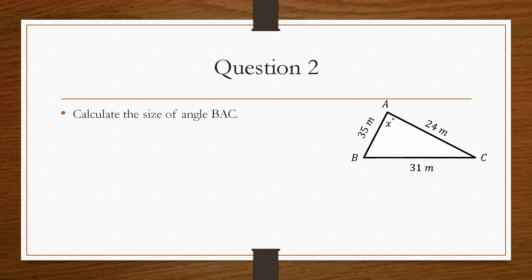And then question two asks us, instead of a side, calculate the size of the angle BAC. So this is B, A, C. And remember, when you have it in this form, the angle is the corner that is represented in the middle letter. So it's B, A. So it's the A side that we're trying to find.